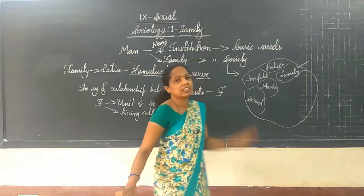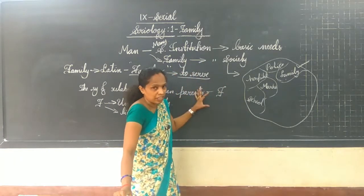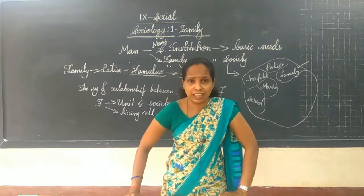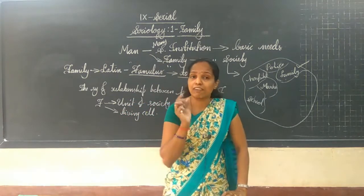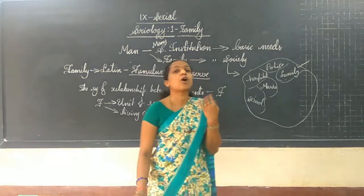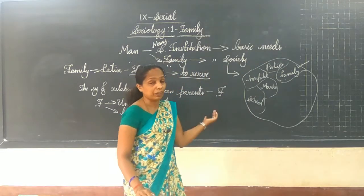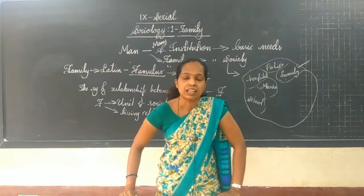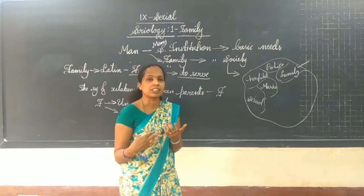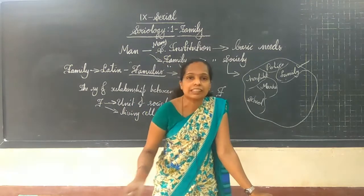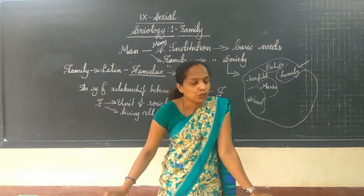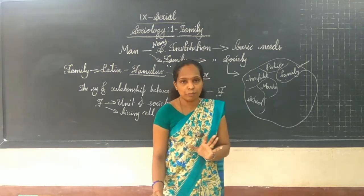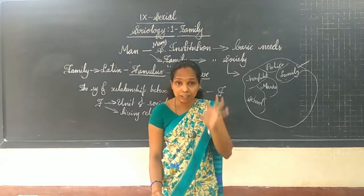Now let's go to the characteristics or features of the family. The first characteristic is that family is universal. It will be there in every society. It cannot be seen only in some places — it can be seen everywhere, in each and every society. The same feelings of love and affection and taking care are shared across all families.